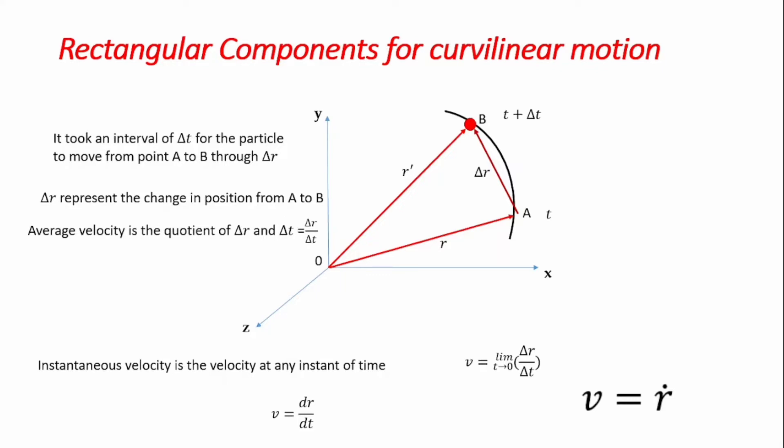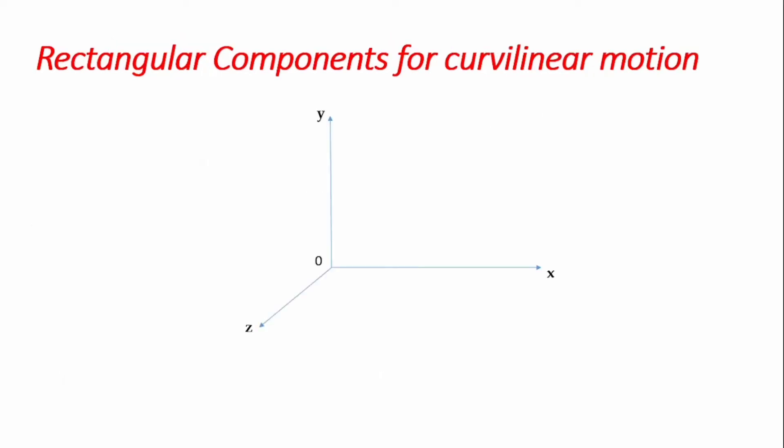The position vector r is a function of the coordinates x, y, and z — x and y for a planar system and x, y, and z for a three-dimensional system. Going ahead with further derivations, if we bring back our coordinate system with the curve path, the particle was at point A initially and has a velocity at that point in time that is tangent to the curve path.